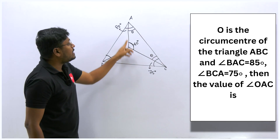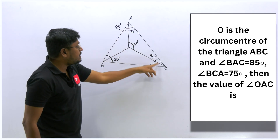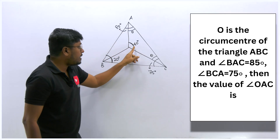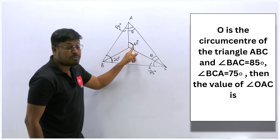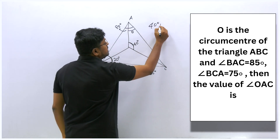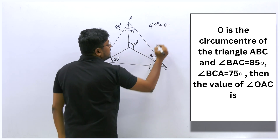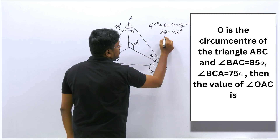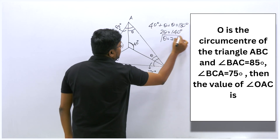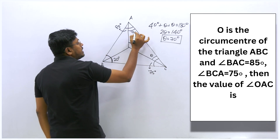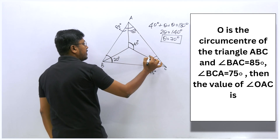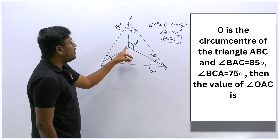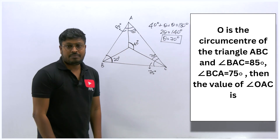In triangle AOC, the circumcenter angle is 40° and the two base angles are both θ (isosceles). So: 40° + θ + θ = 180°, giving 2θ = 140°, θ = 70°. Therefore angle OAC = 70°.